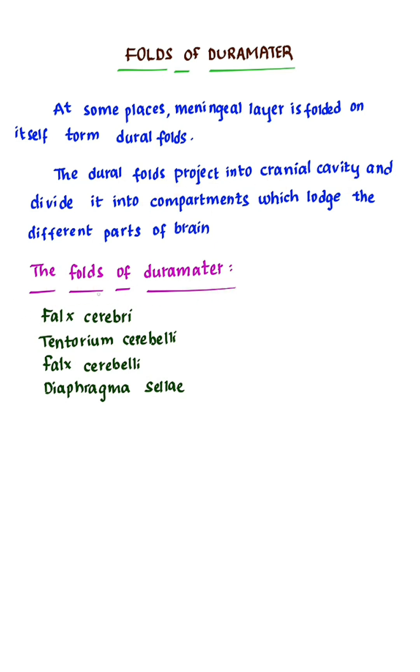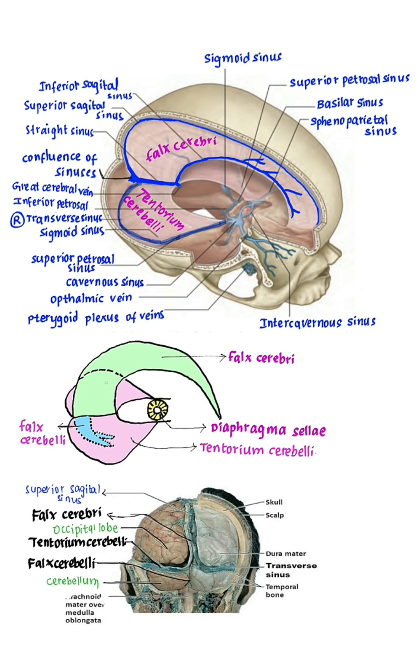The four folds of dura mater are: Falx Cerebri, Tentorium Cerebelli, Falx Cerebelli, and Diaphragma Sellae.